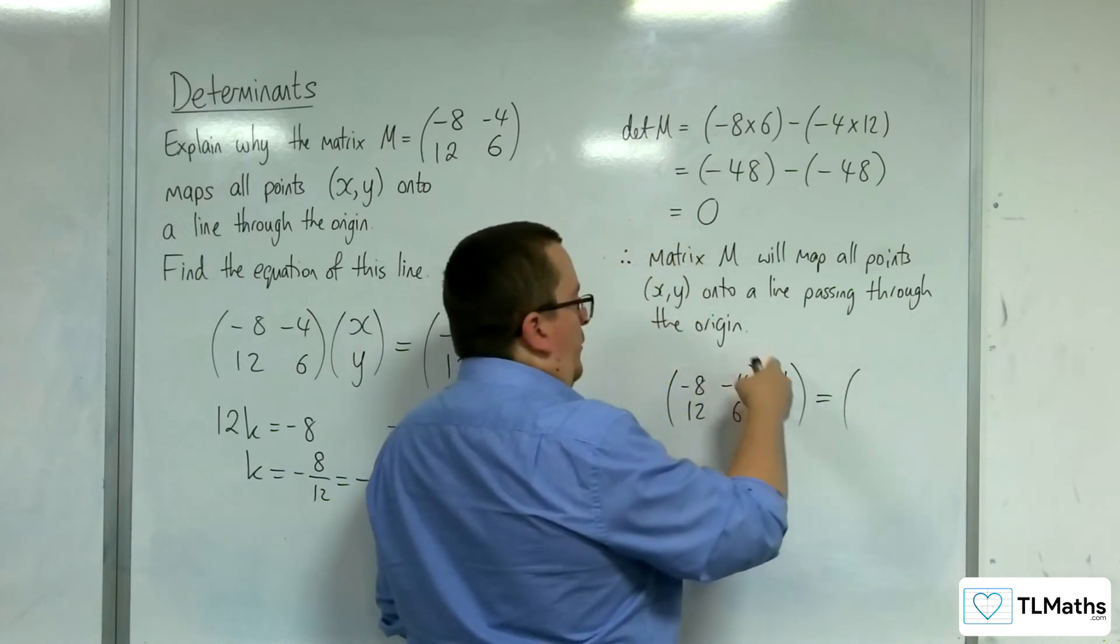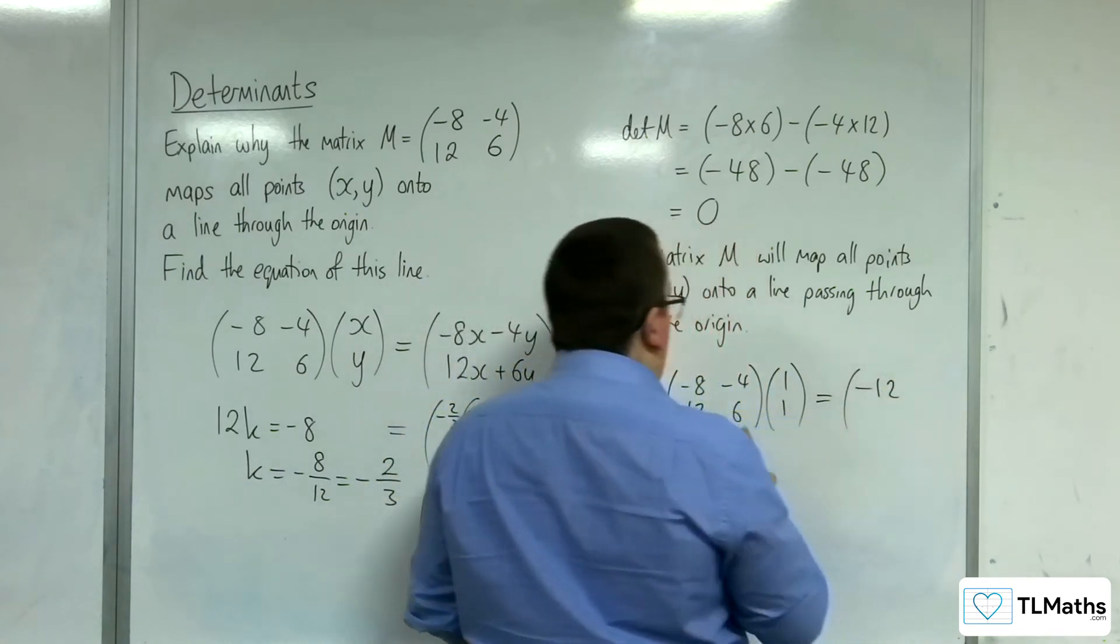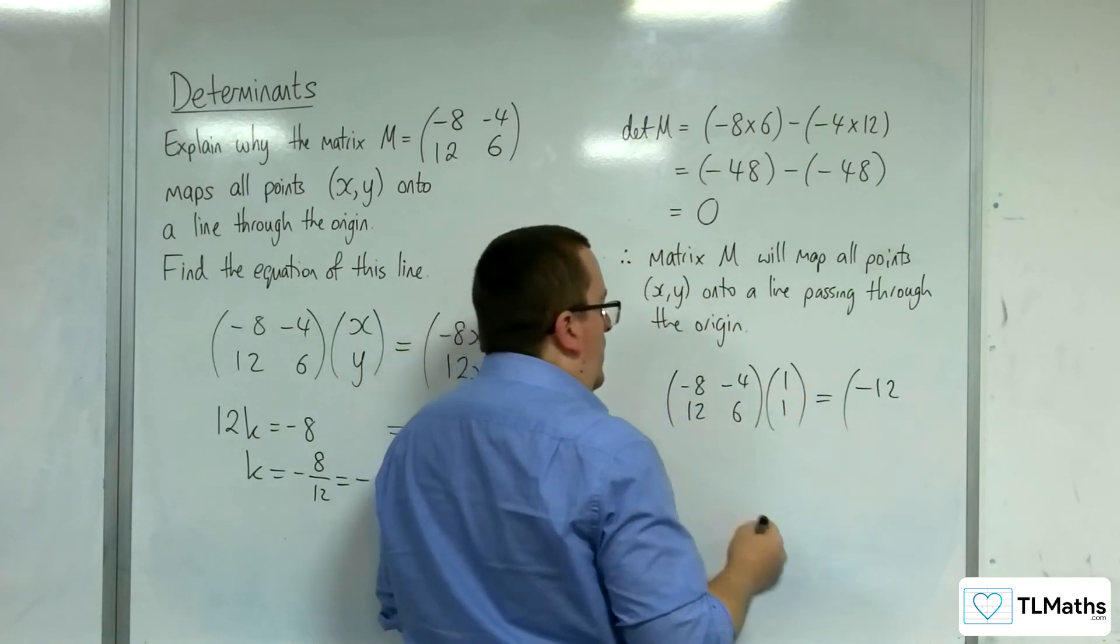Well, minus 8 minus 4 multiplied with the 1, 1 would be minus 12. And 12, 6 multiplied with the 1, 1 would get me 18.